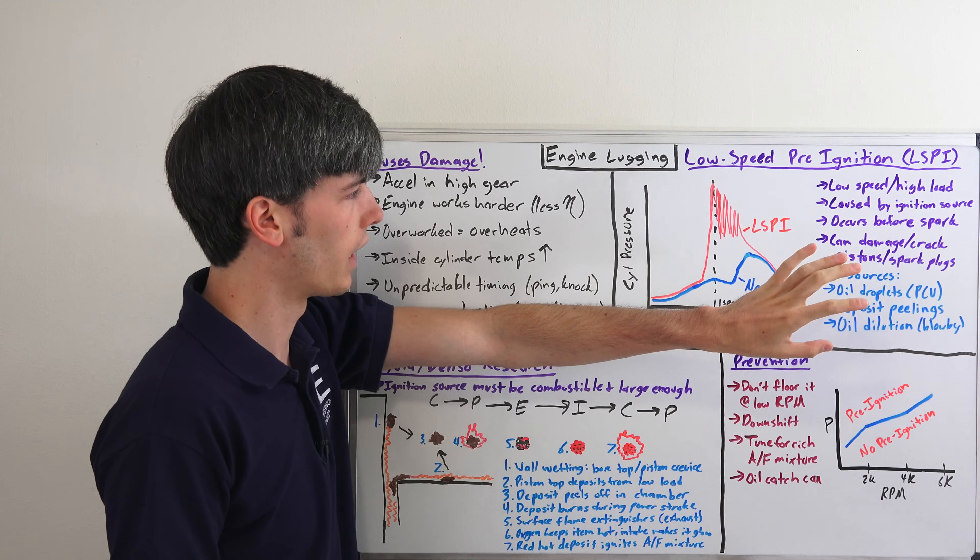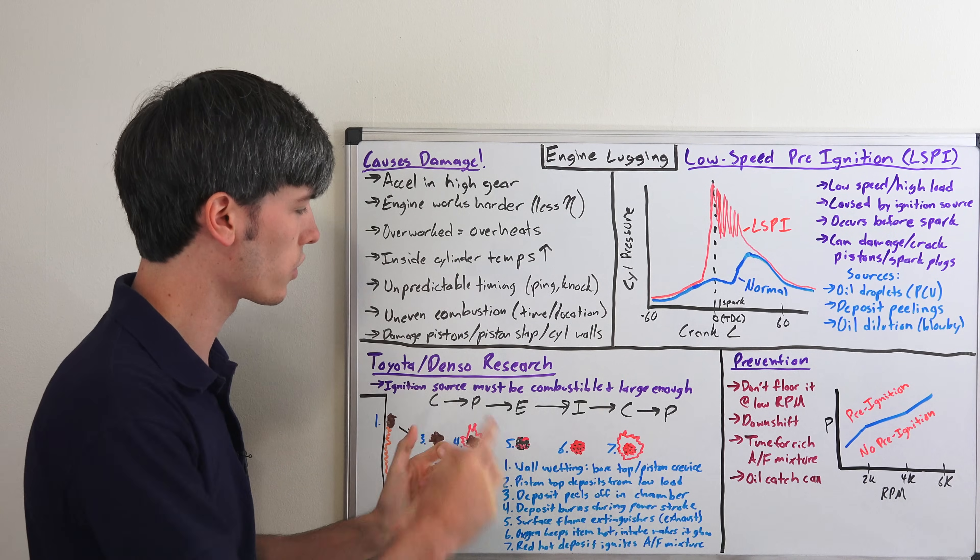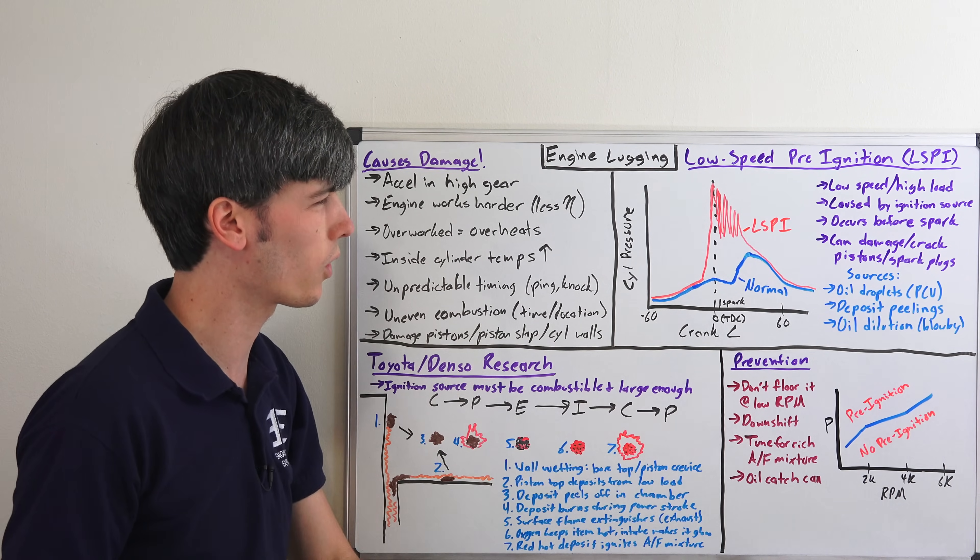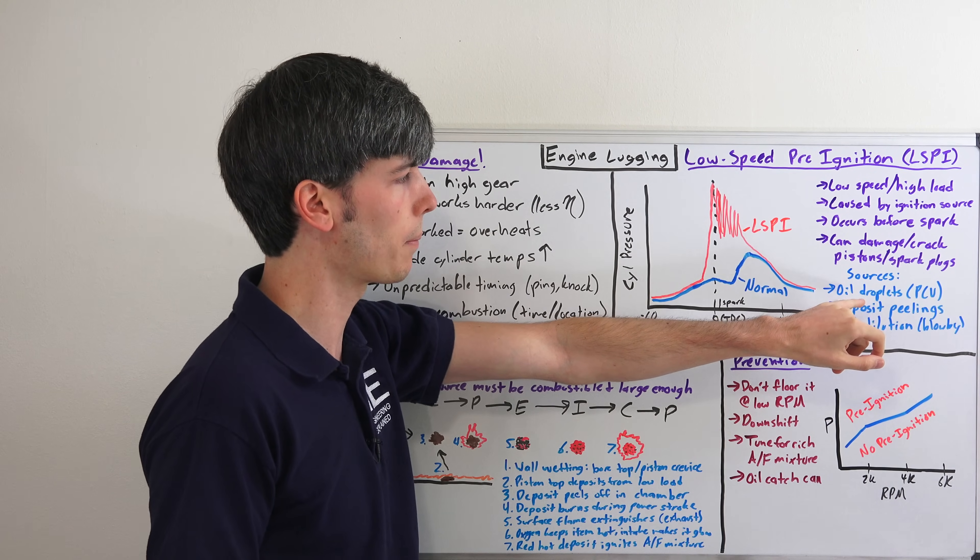What are the sources for this low speed pre-ignition? The ignition source has to be combustible and large enough in order to cause it. Some of the possible sources are oil droplets,